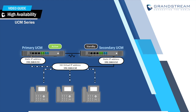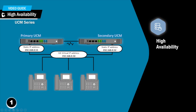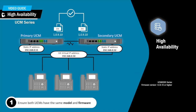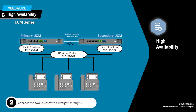Before enabling the high availability feature on the UCM, it is important to know the basic software and hardware requirements as well as the configuration parameters needed for that setup. First, the two UCM devices must be of the same model and use the same firmware version to ensure proper configuration and data synchronization. The two UCM devices must be in the same physical location and directly connected to each other using the heartbeat port on each UCM.